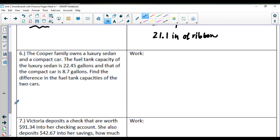Question number six. The Cooper family owns a luxury sedan and a compact car. The fuel tank capacity of the luxury sedan is 22.45 gallons, and that of the compact car is 8.7. Find the difference in the fuel tank capacities of the two cars. So we're going to be subtracting the bigger minus the smaller, adding that 0 on. 5 minus 0 is 5, and 4 minus 7 we can't do, so we'll have to borrow. 14 minus 7 is 7. Bring down the decimal point, and 21 minus 8 is going to give me 13.